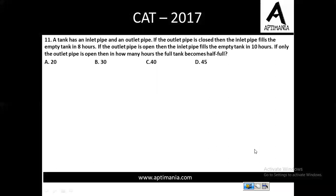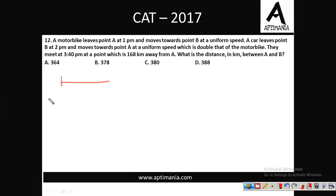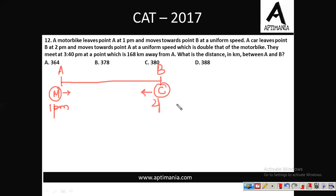Question number 12: A motorbike leaves point A at 1 p.m. towards point B at uniform speed. A car leaves at 2 p.m. moving towards A at a speed double that of the motorbike. Let the motorbike speed be x, so the car speed is 2x. They meet at 3:40 p.m. at a point 168 km away from A.